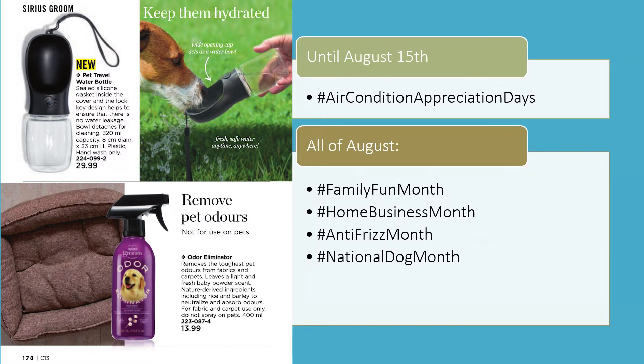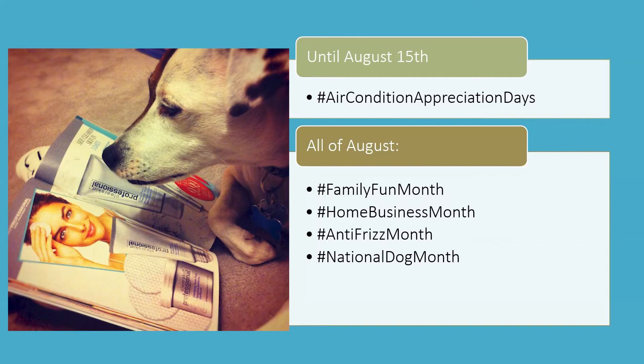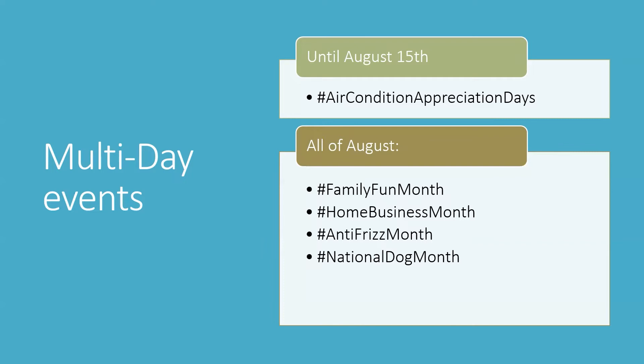For Dog Month you can do a before and after or some fun content with your pop-in graphics — for example, having your pooch looking at an Avon magazine as part of your Avon Beauty Book Club campaign post. For Anti-Frizz Month, you have the Elastin Anti-Frizz Shampoos and tips on how to keep the frizz at bay, such as the new keratin hair products that we're carrying now.